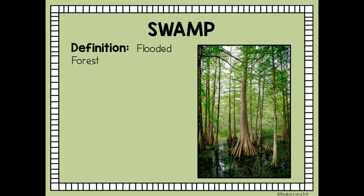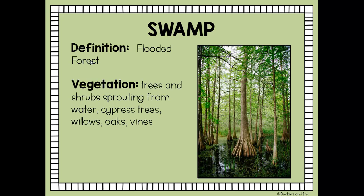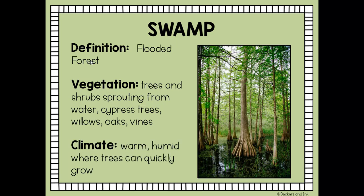The next type of wetland is a swamp. If you've seen the Disney princess movie The Princess and the Frog, it takes place in a swamp in Louisiana. A swamp is defined as a flooded forest. You'll see lots of trees and shrubs sprouting from the water — trees such as cypress trees, willows, oaks, and vines. Swamps are usually found in a very warm, humid climate where trees can quickly grow.